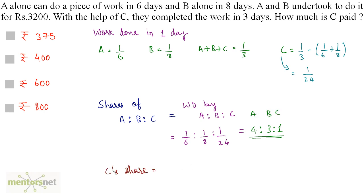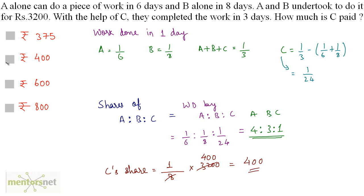To calculate C's share: C's term in the ratio is 1, and the total parts are 4 plus 3 plus 1 equals 8. So C gets 1/8 times Rs 3,200, which equals Rs 400. That is the amount paid to C.